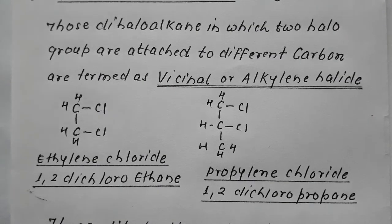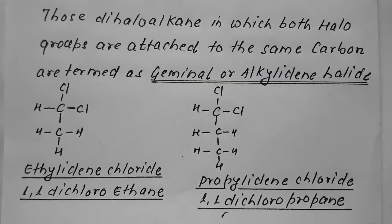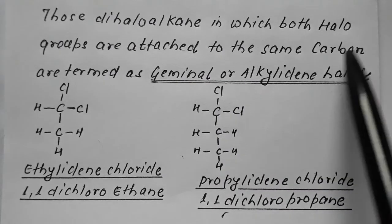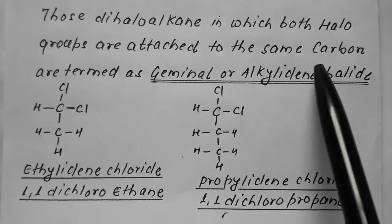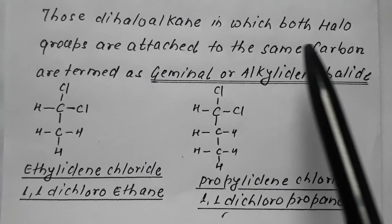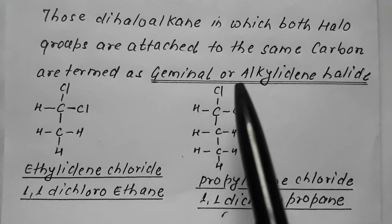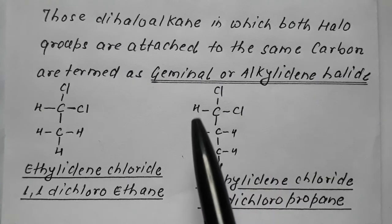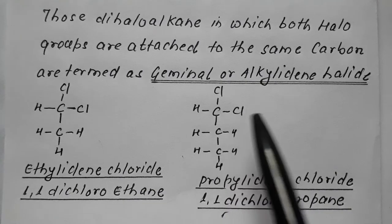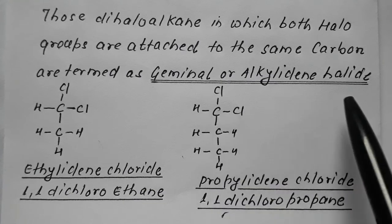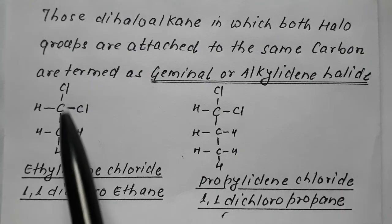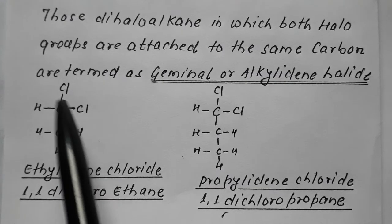Those dihaloalkanes in which both halo groups are attached to the same carbon atom are termed as geminal or alkylidene halide. For example, a two-carbon compound in which both halo groups are attached to the same carbon atom.